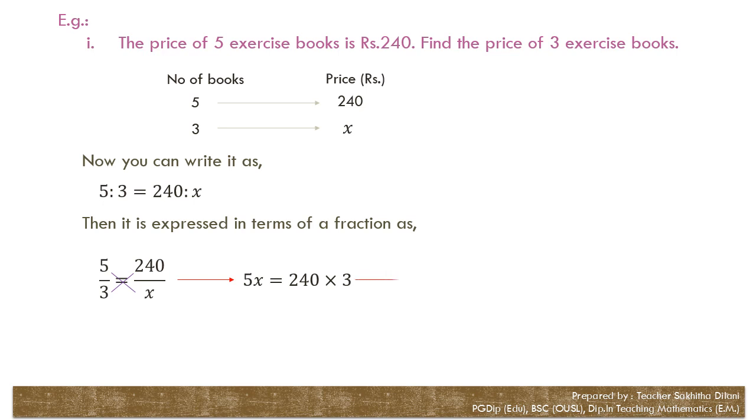5X equals 240 into 3. To make X the subject, you have to divide both sides by 5. 5X divide by 5, 5's get canceled and X is left on the left hand side. On the right hand side, 240 and 5, you can divide both values by 5. 5 divided by 5 is 1, 240 divided by 5 is 48. Now 48 into 3, that is 144. Accordingly, the price of 3 books is 144 rupees.